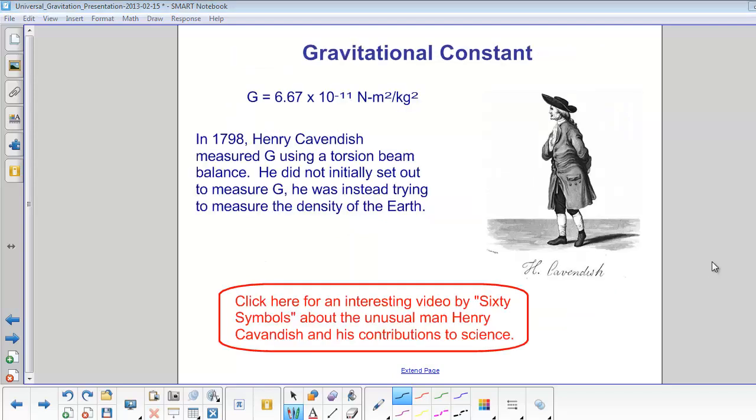Newton published his findings in 1687. He only knew that the gravitational force was proportional to each mass and inversely proportional to the distance between their centers squared. There was something missing. It was a gravitational constant.